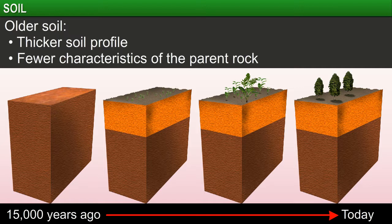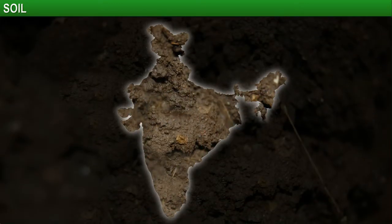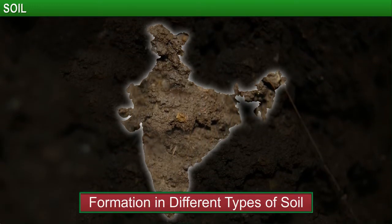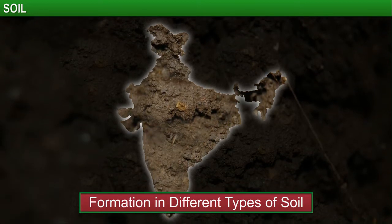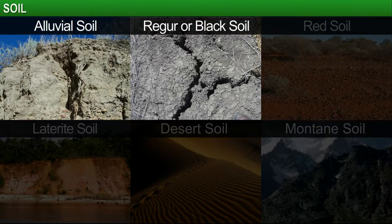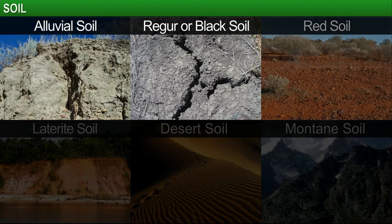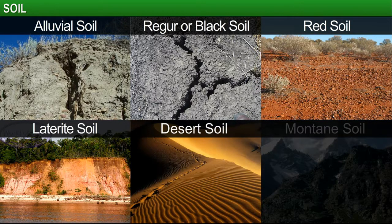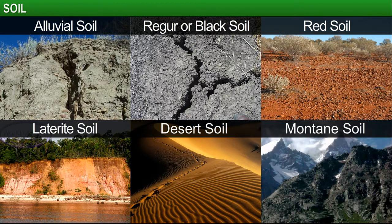However, due to the introduction of other matter in the soil over time, older soil retains relatively fewer characteristics of the parent rock. All of these factors together result in the formation of different types of soil. The types of soil found in India include alluvial, black, red, laterite, desert and mountain soil.